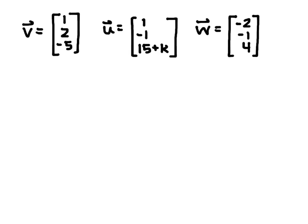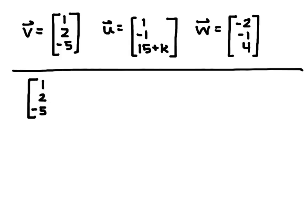The vectors were given 1, 2, negative 5; 1, negative 1, 15 plus K; and negative 2, negative 1, 4 are going to be put into an augmented matrix. So I put my V as the first column, and I can put these vectors in any order. Next I'm going to put the W as my column 2, and the U as my column 3, and augment with 0.